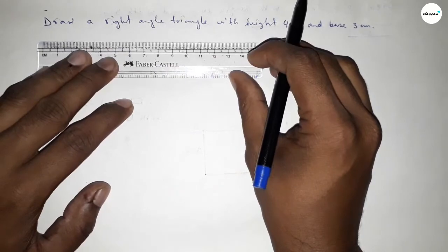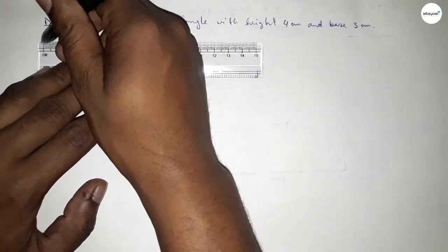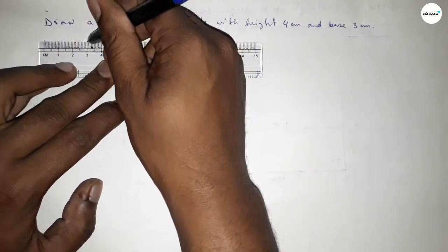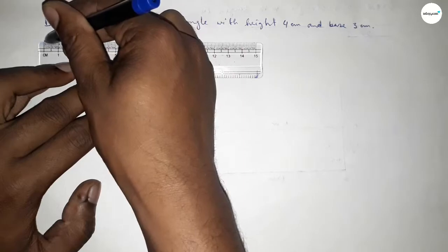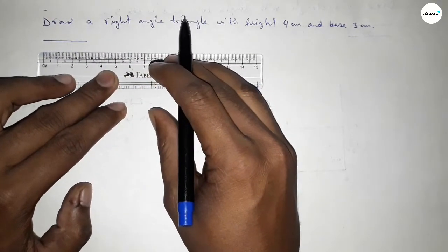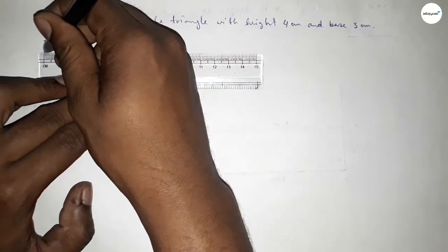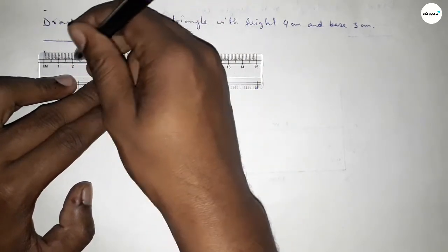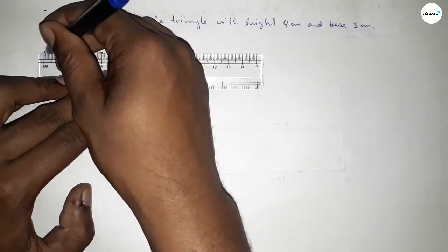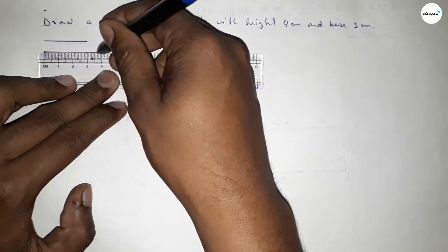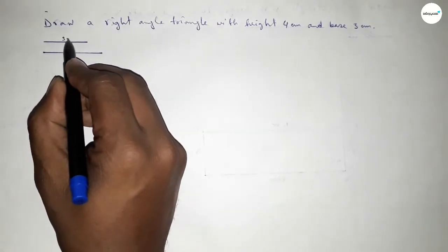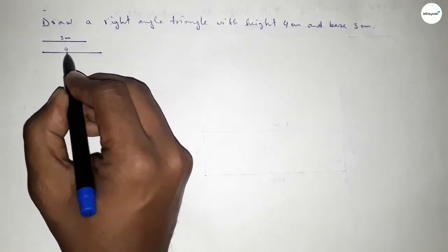First of all, we have to draw a line of length 3 centimeters: 0, 1, 2, 3 — this is 3. And drawing another line of length 4 centimeters — this is 4. So this side is 3 centimeters and this side is 4 centimeters.